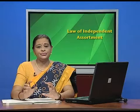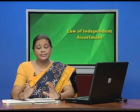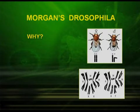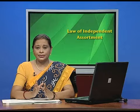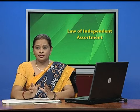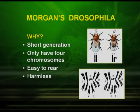The experimental proof that chromosomes carry genes was provided by Morgan, who used the fruit fly for his experiments. Let us see why he chose Drosophila. First, it has a short generation period. Second, it has only four chromosomes. It is easy to rear and it is harmless. You can look into the picture — the female Drosophila has XX chromosomes and the male Drosophila has X and Y chromosomes. The karyotype is also illustrated in the picture.